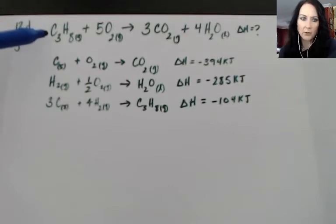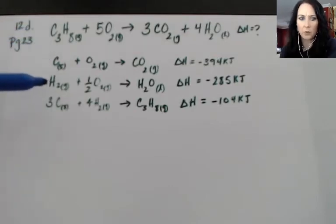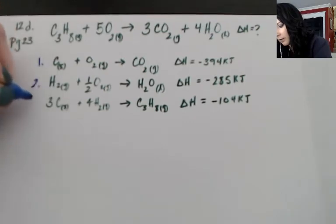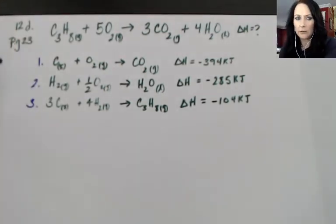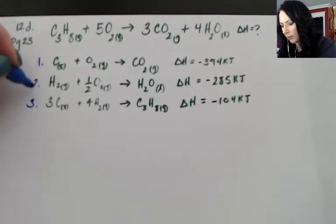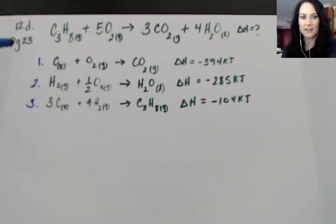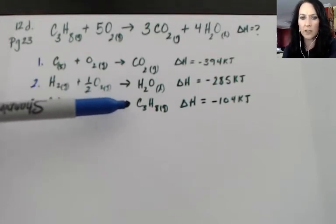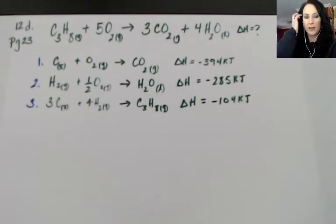So if I'm choosing C₃H₈ and I look through these one two three, actually let me just number them so we don't get them confused. If I look through reactions one, two, and three, I see that C₃H₈ appears in reaction number three and it appears on the product side. So that's good. I see it and it's there only one time.